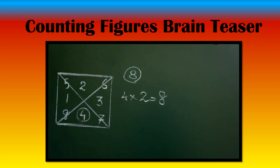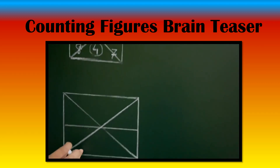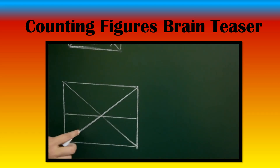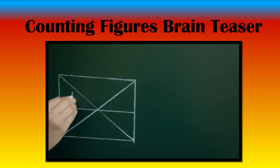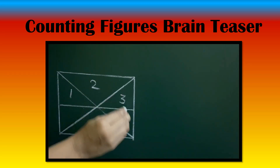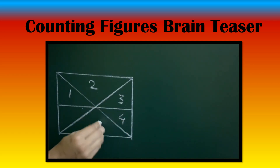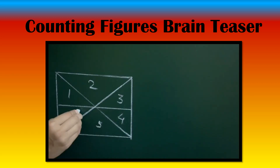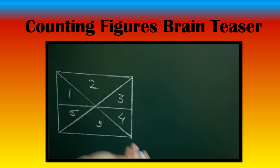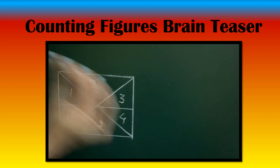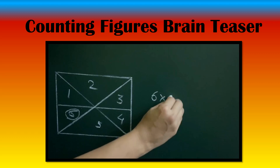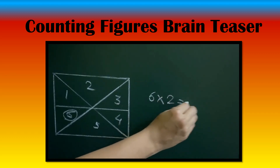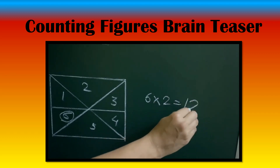Let's see another example. In this figure, count the number of triangles: 1, 2, 3, 4, 5, 6. So what do we have to do? Double it. Take the maximum number and double it. So 6 times 2 equals 12 triangles in this figure.